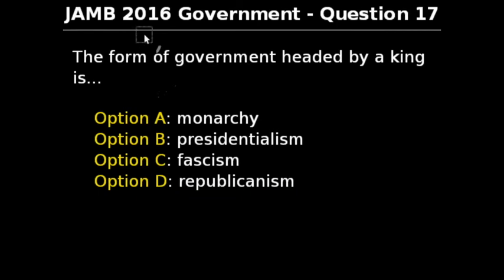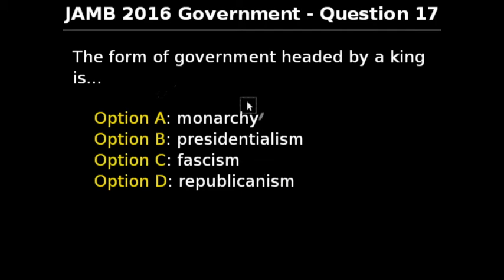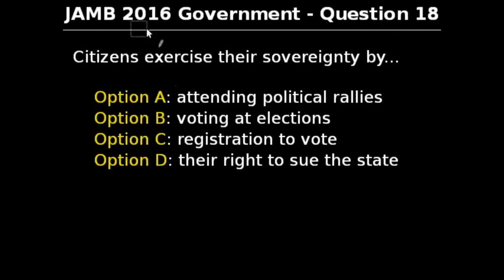Question 17 of JAM 2016 government exam says: the form of government headed by a king is — option A: monarchy, option B: presidentialism, option C: fascism, option D: republicanism. The correct answer is option A, monarchy. Monarchy is a system of government by a king, queen or emperor; it makes the office of the head of state hereditary and not elective. So our correct answer is option A, monarchy.